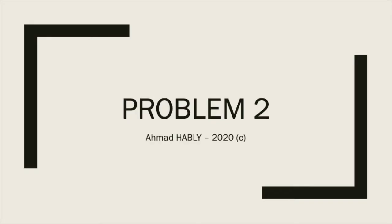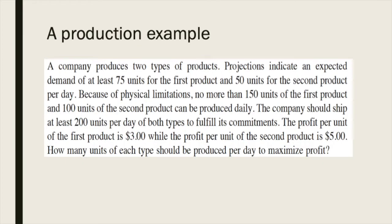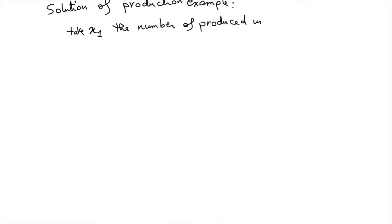For problem 2, which was about a production example, we want to produce two types of products. The solution of this production example is the following: we take X1 as the number of produced units of the first product per day, and X2 is the number of produced units of the second product per day.